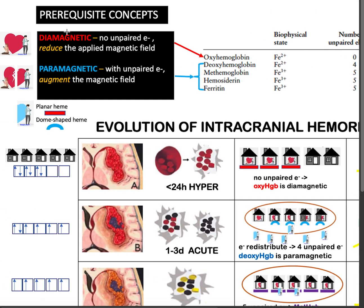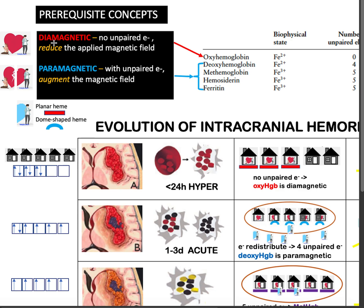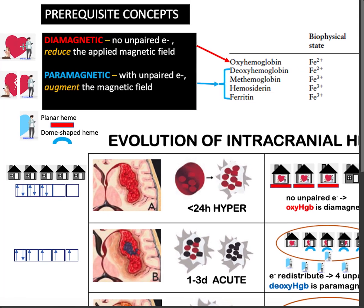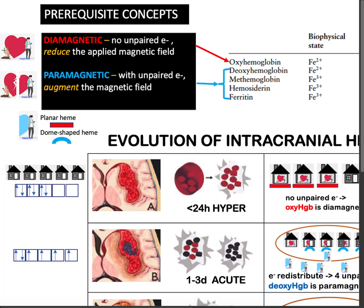First, when we say diamagnetic, it means the substance has no unpaired electrons and would reduce the applied magnetic field. If these electrons are people, when paired, they are calm and satisfied. When unpaired, these electrons are sad and agitated and will cause some stirring of the magnetic field.